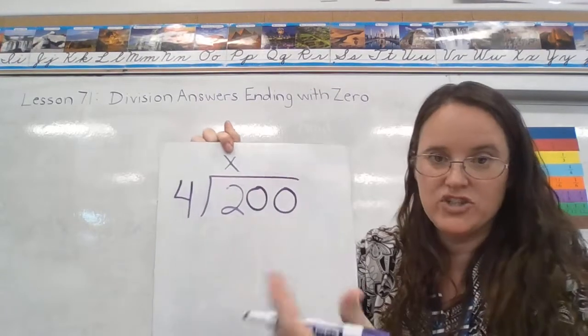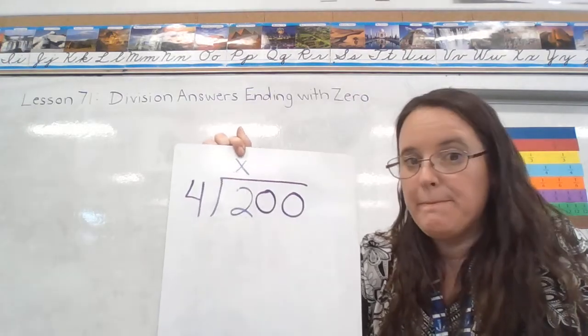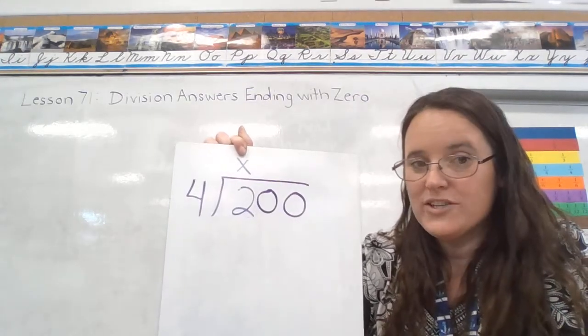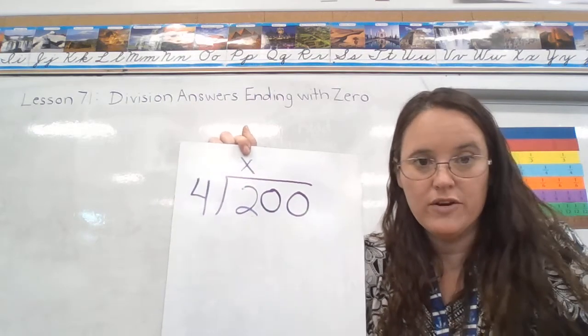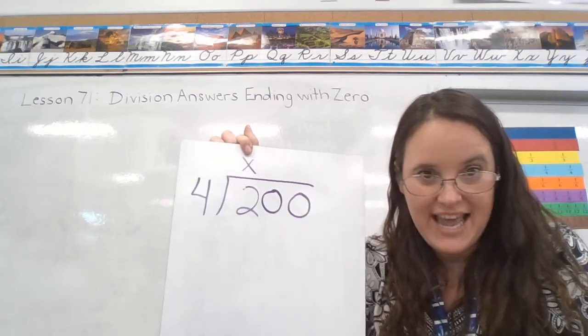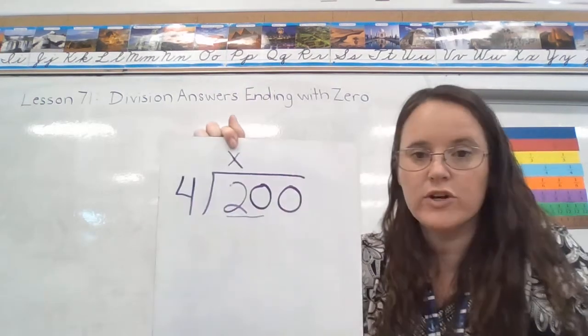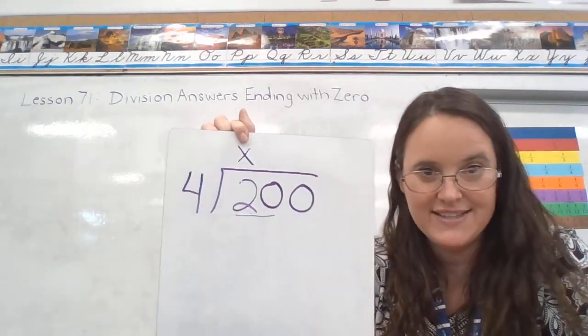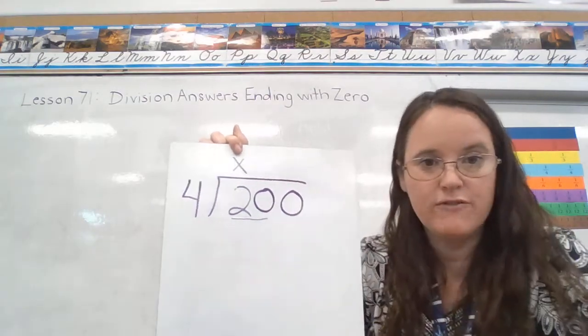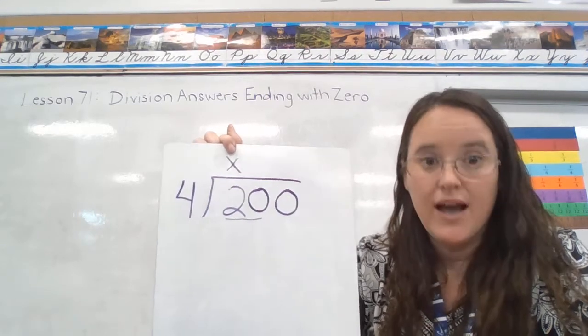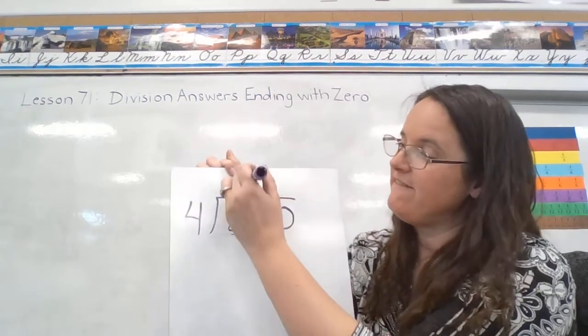So since we are not going to have a digit in the hundreds place, we don't want to write any number above that two. So then our next question, we had two hundreds, we couldn't divide the two hundreds. But we can trade in those hundreds for tens. And for every hundred, we are going to get 10 tens. So if we have two hundreds, we can trade it in for 20 tens. So now with those 20 tens, can I put them into four groups? I sure can. And how many would be in each group? We would have five.